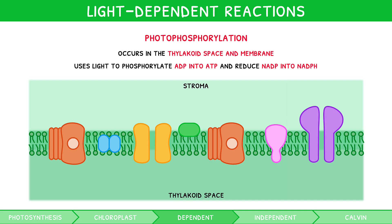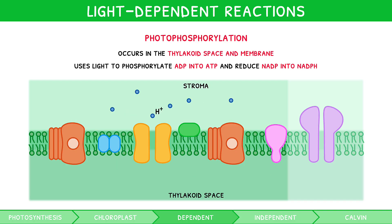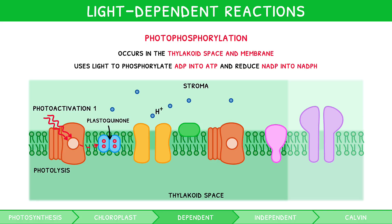The electron transport chain is a collection of photosystems, proton pumps, and electron carriers embedded in the thylakoid membrane, carrying out a four-stage process. First, photoactivation 1 occurs within the reaction centre of photosystem 2. Two photons of light are absorbed by the reaction centre and used to promote two electrons, which are donated to an electron acceptor known as plastoquinone, reducing it. This process occurs twice, producing two reduced plastoquinone and removing four electrons from the reaction centre. The lost electrons are replenished by photolysis, which is the process by which the reaction centre splits water into oxygen, four protons, and four electrons.